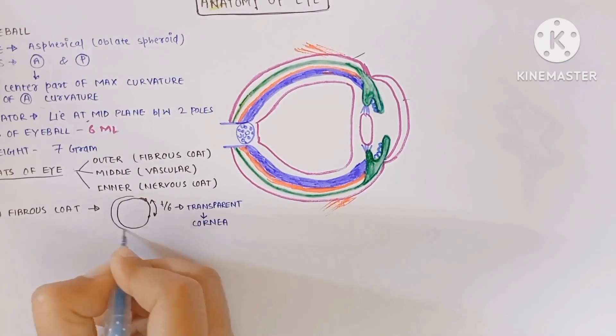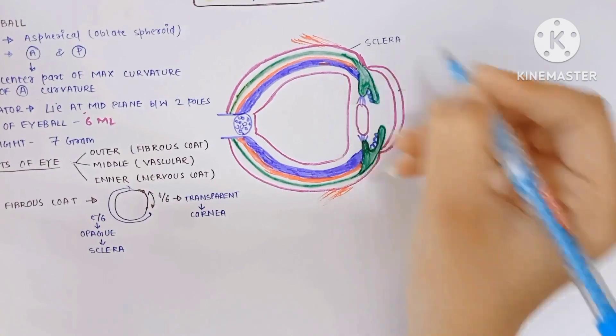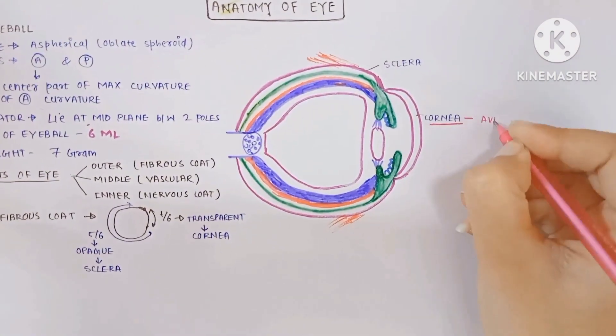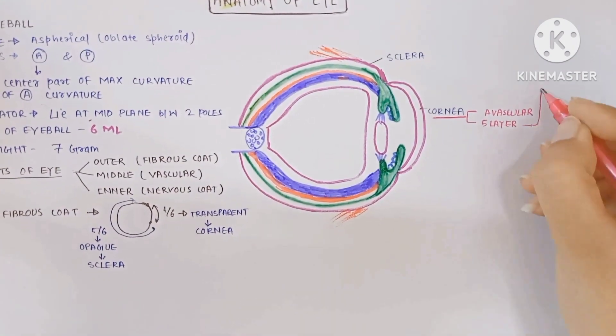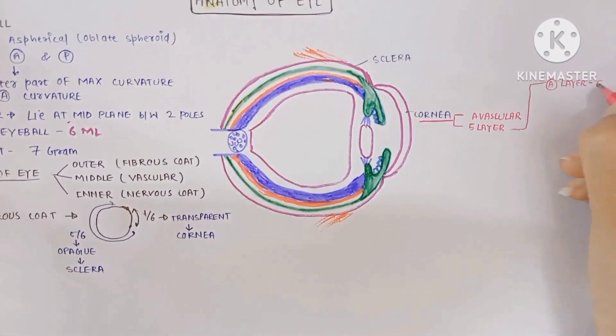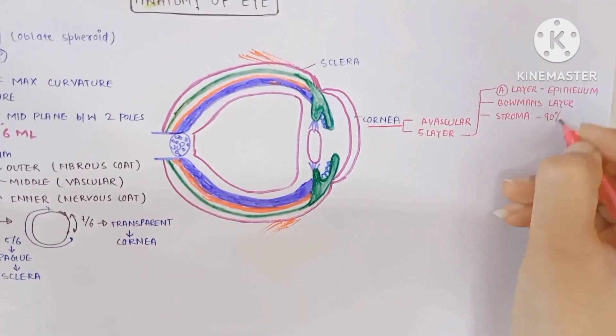This is sclera, this is cornea. The cornea is avascular and has five layers: the anterior layer is epithelium, then Bowman's layer, stroma which is about 90% of the cornea, Descemet's membrane, and endothelium.